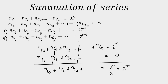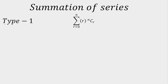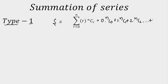Now let's move on to the types of series. How to identify Type 1: if the binomial coefficient is being multiplied by some constant and you see some pattern or series, that is Type 1. Let S be the sum of the series. If you open it, you'll get 0·nC0 plus 1·nC1 plus 2·nC2 and so on till n·nCn. There are two ways to solve this.